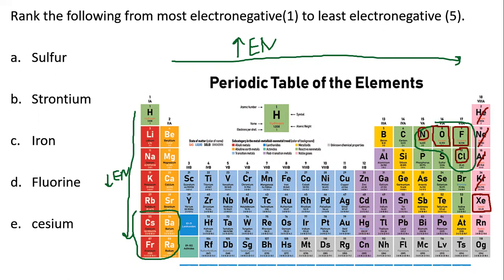In a ranking example, fluorine would be first (most electronegative). Moving down and to the left, sulfur would be second, iron would be third, then strontium, and cesium would be least electronegative. This illustrates the trend from most electronegative to least, and nonmetals tend to have greater electronegativity than metals.